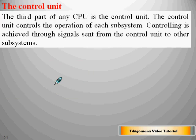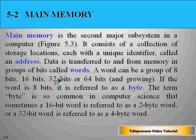The third part of any CPU is the control unit. The control unit controls the operation of each subsystem. Controlling is achieved through signals sent from the control unit to other subsystems.